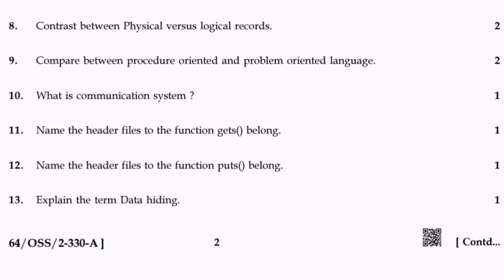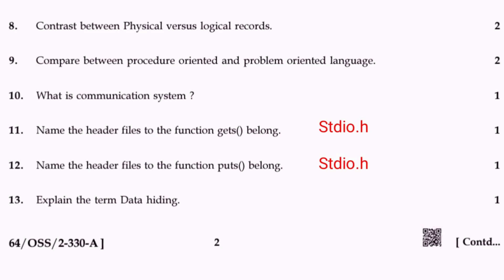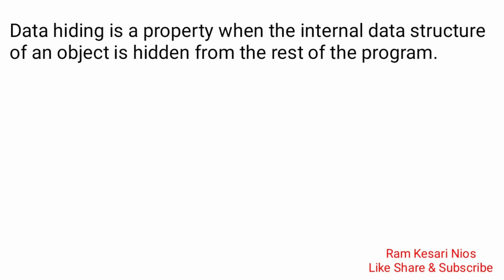Question 10: What is a Communication System? A communication system is a system which describes the information exchanged between two points. Question 11: Name the header file to which the function getS belongs — stdio.h. Question 12: Name the header file to which the function puts belongs — stdio.h. Question 13: Explain the term data-hiding. Data-hiding is a property when the internal data structure of an object is hidden from the rest of the program.